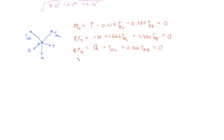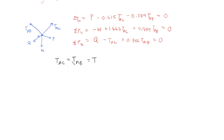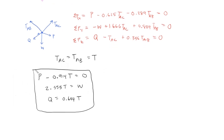I apologize — the problem states that TAC actually equals TAB. I didn't realize that earlier when I said we have three unknowns and three equations. Really, we had four unknowns and three equations, so that system cannot be solved. Given that TAC equals TAB, we can now rewrite these equations using a single general tension force T. With that error fixed, we now have three unknowns and three equations, and the system is solvable.